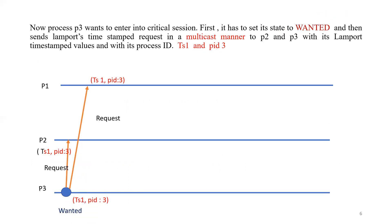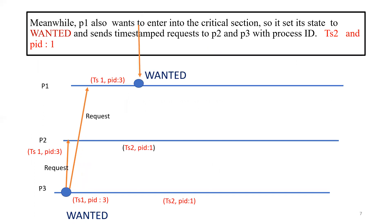Process P3 wants to enter the critical section. First, it sets its state to 'wanted' and sends a Lamport timestamp request in multicast manner to processes P1 and P2 with its own process ID. Here, TS1 and PID3 are the timestamp and process ID. Process P1 also wants to enter the critical section, so it sets its state to 'wanted' and sends a timestamp request to P2 and P3 with its process ID: TS2 and PID1.